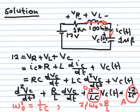Comparing with the standard form: ω₀² = 1/LC, so ω₀ = √(1/LC); and 2ζω₀ = R/L. The particular integral is the constant A divided by a₂ = (12/LC)/(1/LC) = 12. With L = 100 mH, C = 1 μF, and R = 1 kΩ, we can now compute all coefficients and proceed to solve the system.